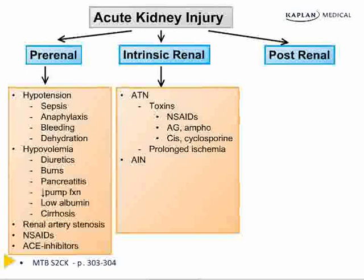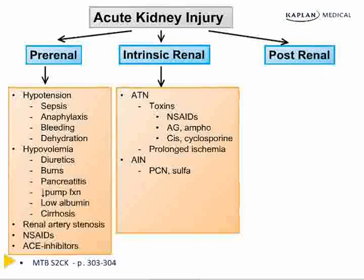Acute interstitial nephritis, or AIN, is an allergic response to medications — different from the drugs associated with ATN. The drugs that lead to AIN are drugs that patients are often allergic to, such as penicillins and sulfa drugs. Sulfa-containing drugs to remember include trimethoprim-sulfamethoxazole (Bactrim), furosemide, and hydrochlorothiazide. In AIN, the clinical vignette will often describe other systemic signs of an allergic reaction, such as a drug rash or eosinophils in the urine or peripheral blood.